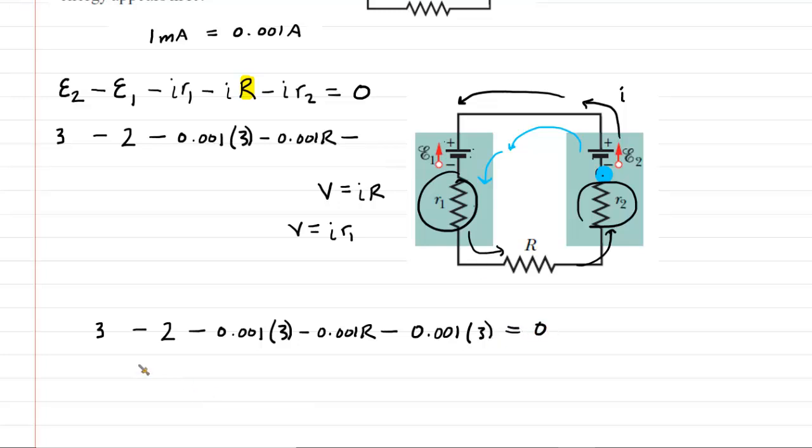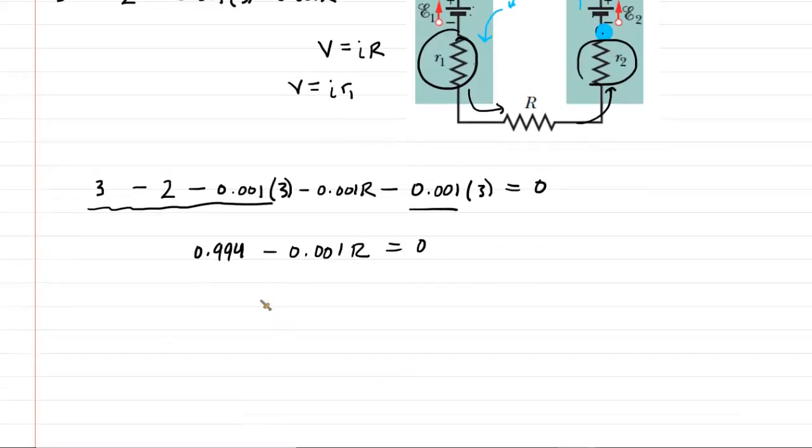Now, it should be pretty easy to solve. We can combine all of these like terms. So three minus two minus the 0.001 times three minus the 0.001 times three. This gives us 0.994 minus 0.001 capital R equals zero. We could subtract the 0.994 from both sides. And then finally, we'll divide both sides by negative 0.001. And we will see that capital R is 994. This will come out to the standard unit of ohms. So this is the correct answer to part A of the question.